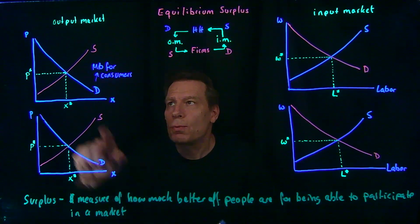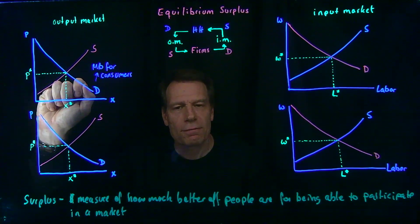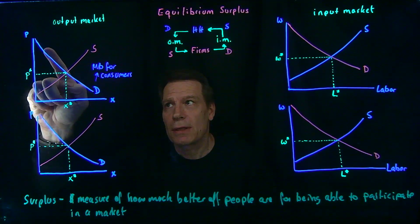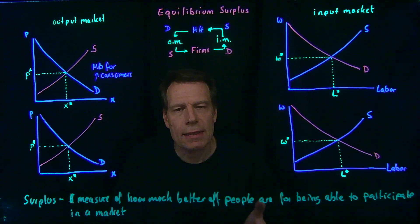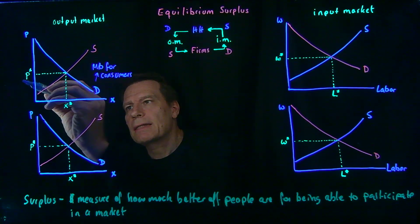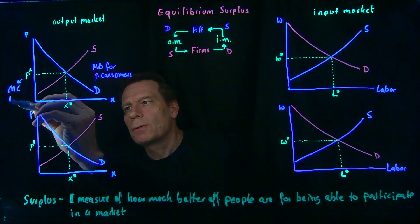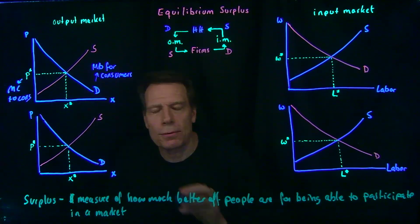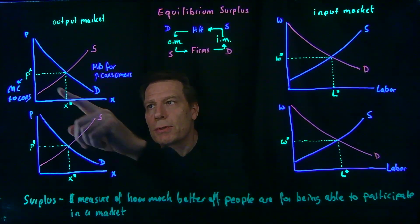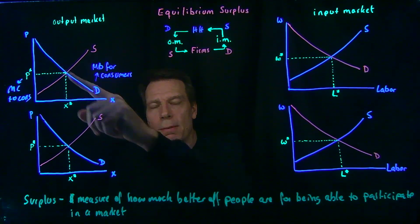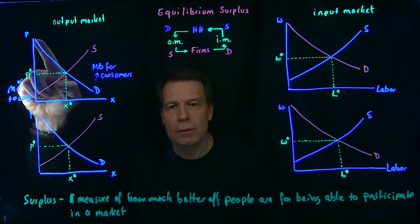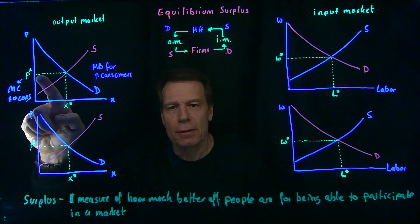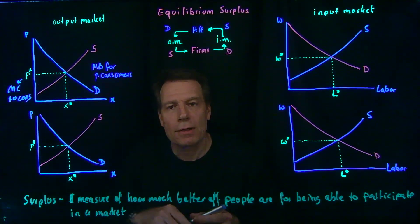There's some household willing to pay this much for that first good in the market, another willing to pay this much, and so on. Where is the marginal cost? For households, the cost of consuming goods is the price they have to pay for those goods — that price is the marginal cost to consumers. Households purchase goods so long as the marginal cost is less than the marginal benefit. So if a consumer is willing to pay this much for that first good but only has to pay this much, that consumer is better off by that vertical distance.